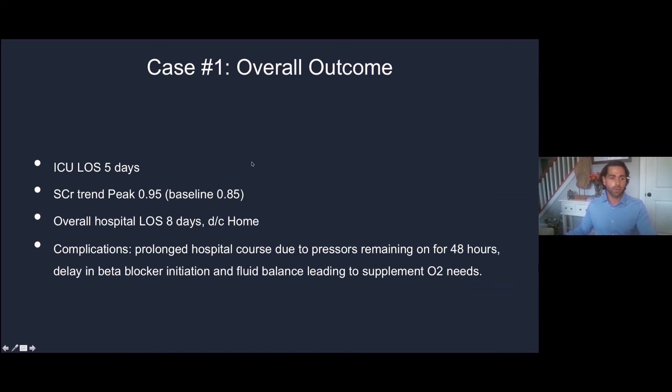The overall outcome of this patient, not terrible, but not exactly our goal either. ICU length of stay of five days, no AKI, overall length of stay of eight days, discharged home. But let's talk about the complications. She remained on pressors for about 48 hours after surgery. For those who do cardiac surgery critical care, you know beta blocker initiation is a big part of post-CABG. While you're on pressor, you're not going to start that beta blocker, so that's going to add delay to our length of stay. And oxygenation issues after eventually giving volume led to supplemental oxygen needs.